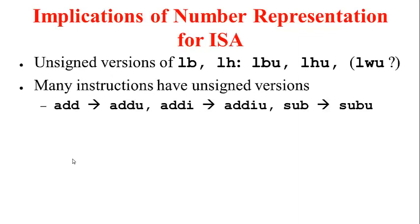MIPS supports both signed as well as unsigned representations for integers, and this has implications for the instruction set architecture. For example, the instructions load byte and load half word have unsigned versions: load byte unsigned and load half word unsigned. What is the difference between load byte and load byte unsigned? Do we need a separate instruction for load word unsigned? Do you think there is such an instruction?